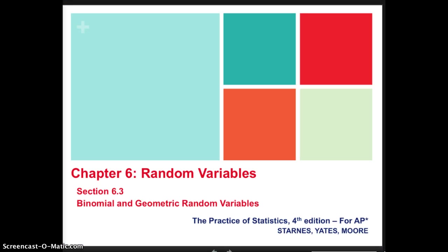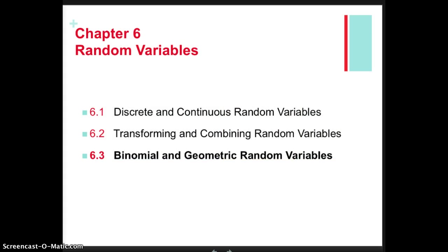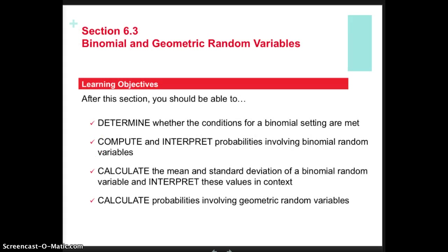Welcome back to AP Statistics. This is Ms. Gokin. We're going to be talking about section 6.3, which is all about binomial and geometric random variables.